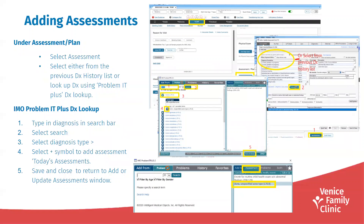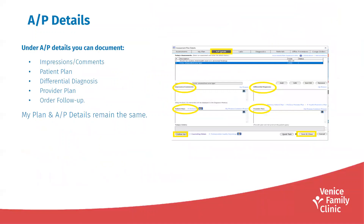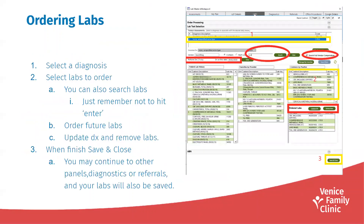Adding assessments — this workflow is still the same. You would still go into SOAP, go to the assessment tab, look it up in the problem list/IMO module, and add your assessment there. My Plan — still the same workflow; you're still able to order fit tests and schedule optometry or retinal photo appointments. AP Details — still the same; you document your impressions based off the assessment. Ordering labs — still the same workflow, nothing's changed.